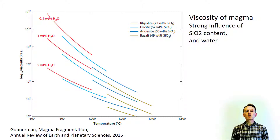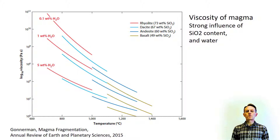The dependence of viscosity on dissolved water increases with silica content. Notice the scale on the left axis: viscosity is measured in units of Pascal seconds, abbreviated Pa·s. The scale changes by 12 orders of magnitude, going from 0 to 10 to the power of 12 Pascal seconds. The viscosity of magma is thus extremely variable, strongly influencing the style of magma flow.